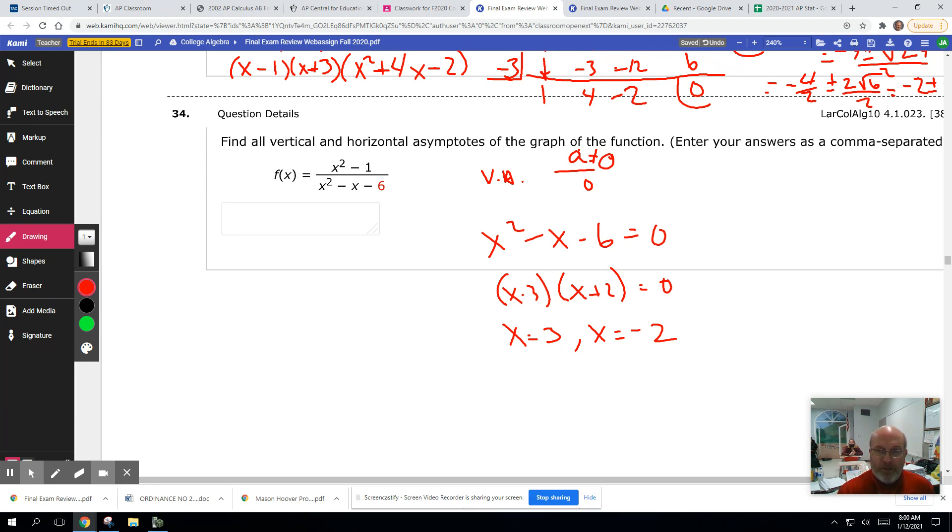If they don't make the numerator 0. The only thing that makes the numerator 0 is 1 and negative 1, because that factors to X plus 1 times X minus 1. So both of these are going to be vertical asymptotes.